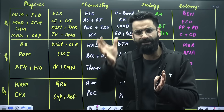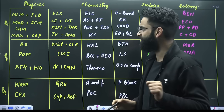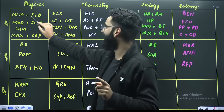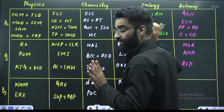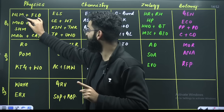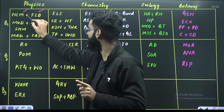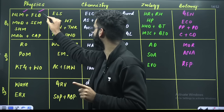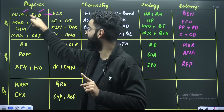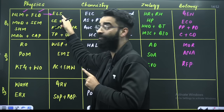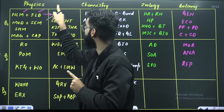So my dear students, when it comes to your revisions, in physics you'll start with NLM — Newton's Laws of Motion — then fluids. You'll be following the strategy row-wise. In physics, Newton's Laws of Motion and fluids you'll do first. You'll cover the theory of these two particular chapters. And once you cover the theory of these two chapters, you'll directly move into electrostatics. You will cover the electrostatics theory. First you'll cover the theory of these two, after that on the same day you'll cover the theory of electrostatics. And once you are done with the theory of electrostatics, then you will solve the problems of these two chapters and this particular chapter.